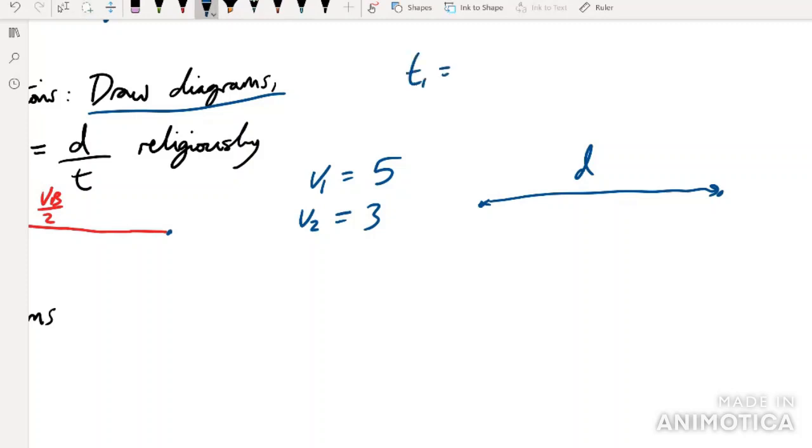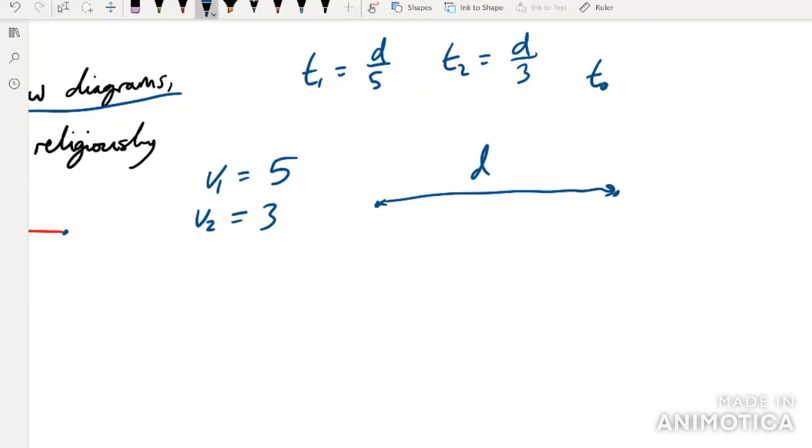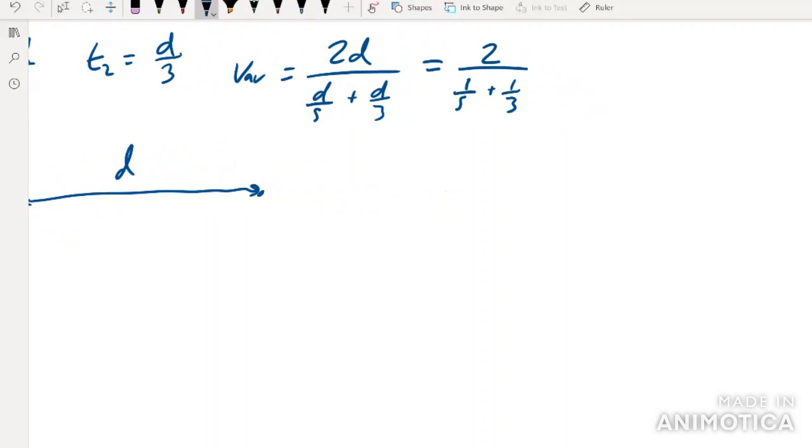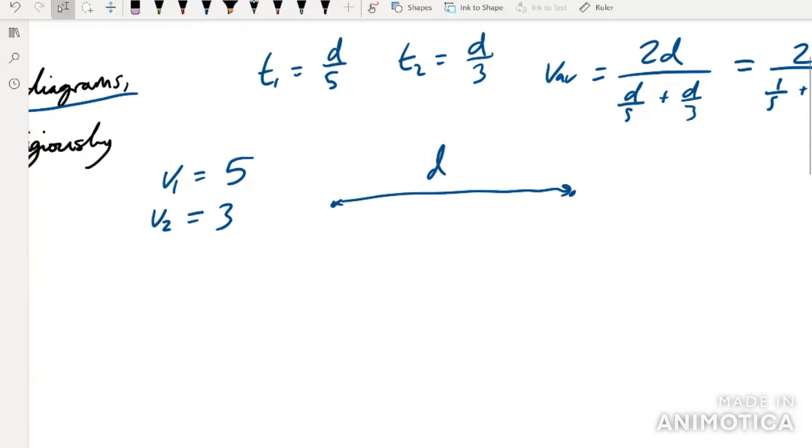Time two is D over three. And then what's the average? Well, that must be equal to the total distance divided by the total time. In other words, two D divided by the total time which is going to be D over five plus D over three. D cancels out. And so we just have two over one over five plus one over three, which we can start working out. I suppose if we multiply top and bottom by 15, we get 30 over eight.